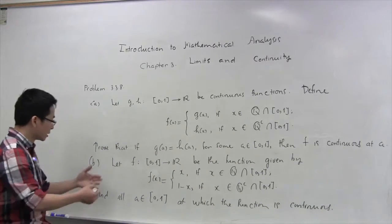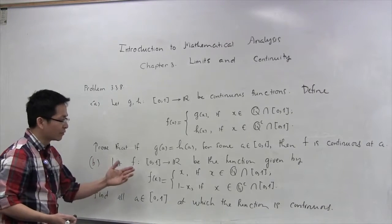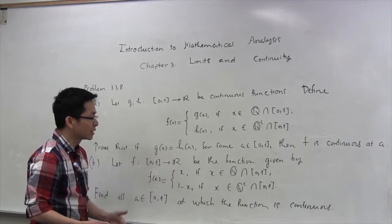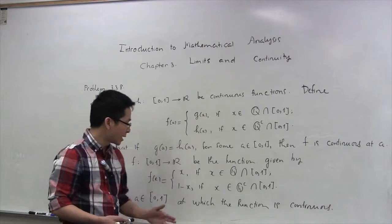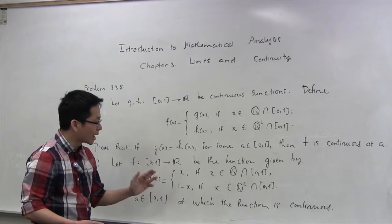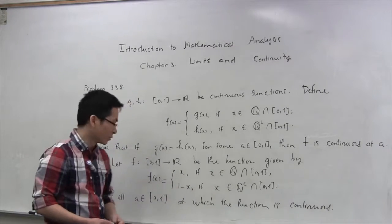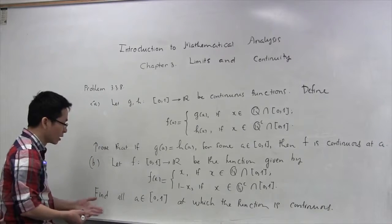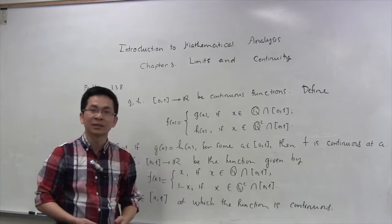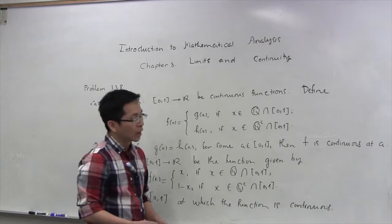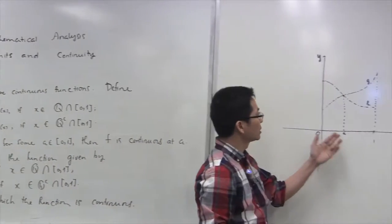In part (b), we define the function f as follows: f(x) equals x if x is a rational number in [0,1], and f(x) equals 1 minus x if x is an irrational number in this interval. We have to find all a in [0,1] at which the function f is continuous. I'm going to illustrate the function f as follows.